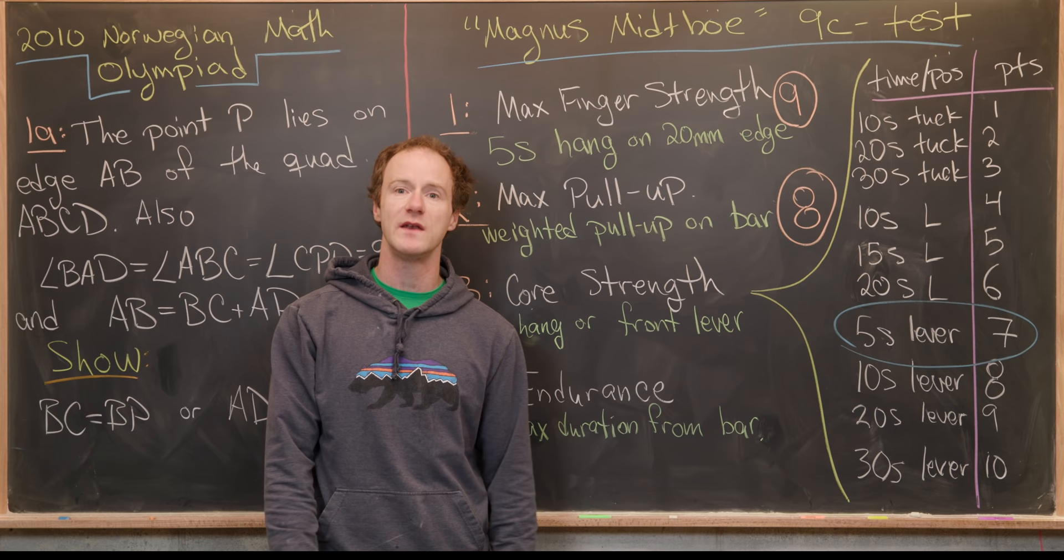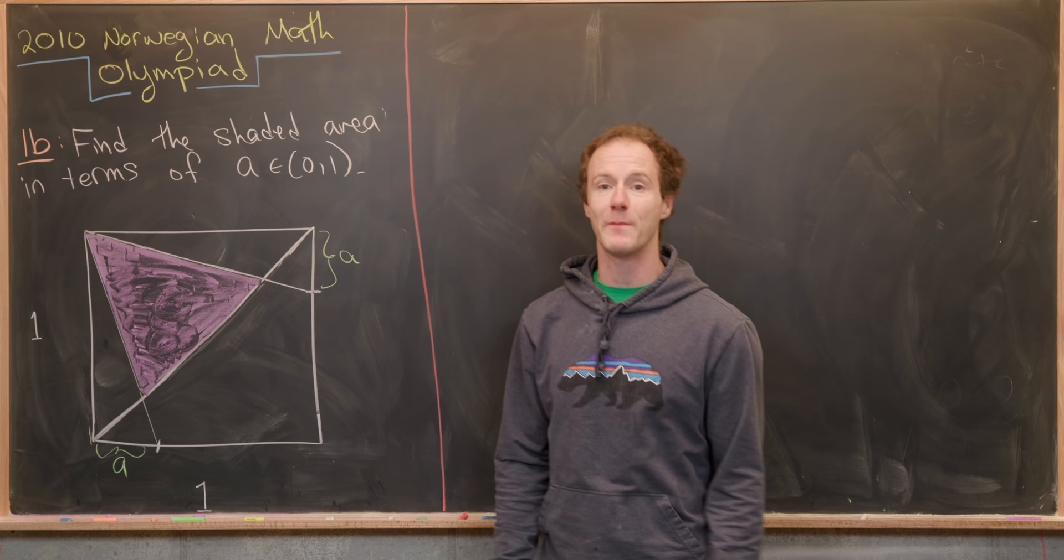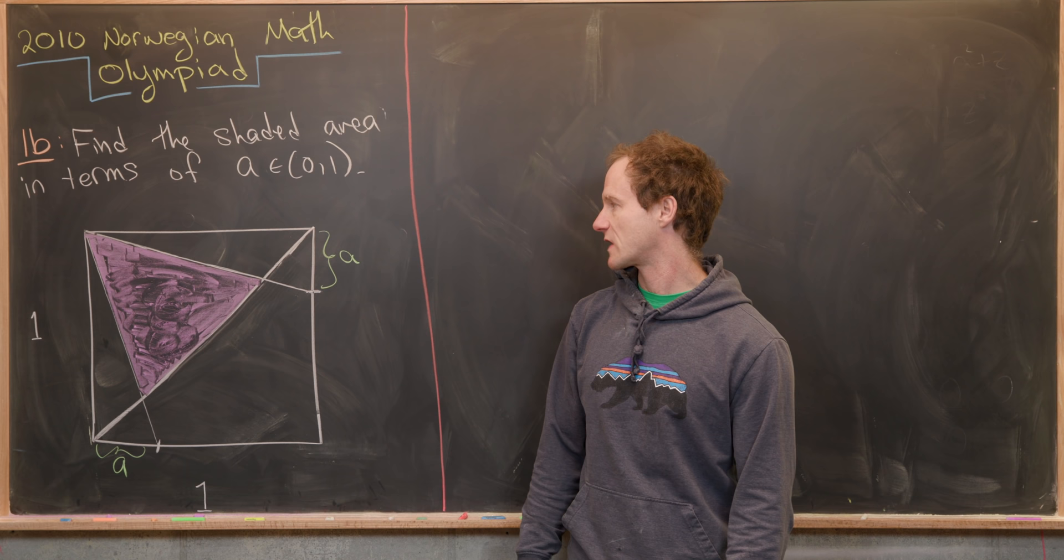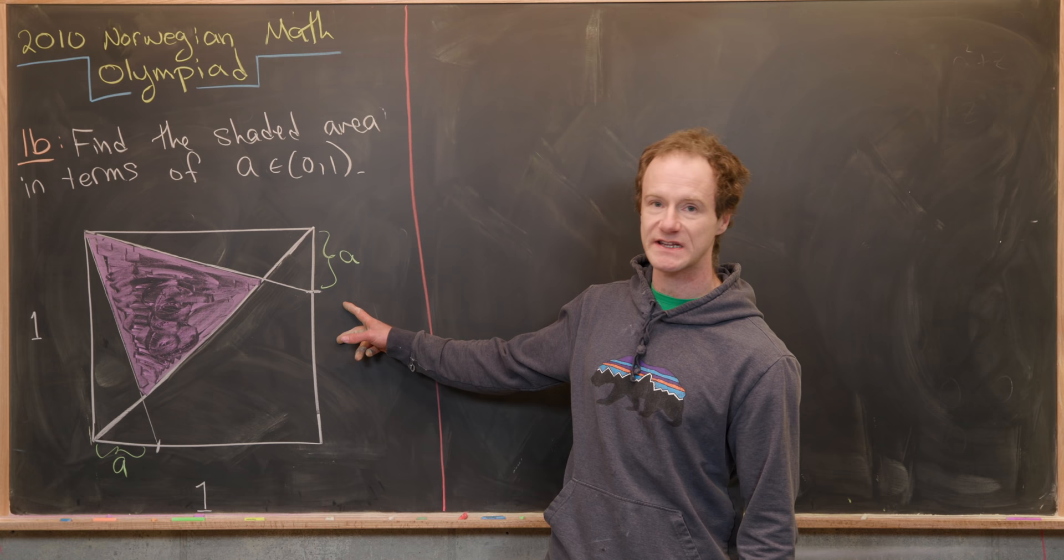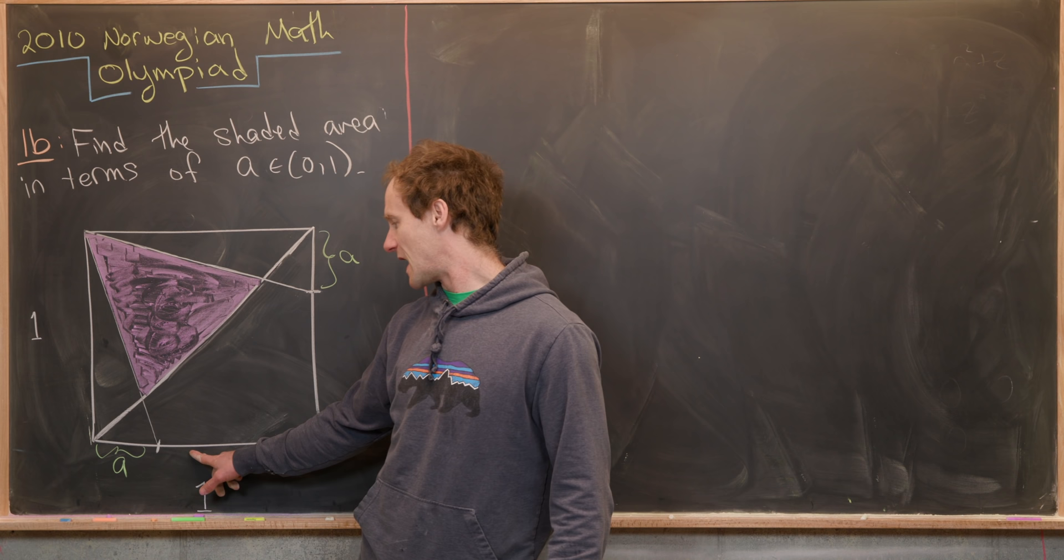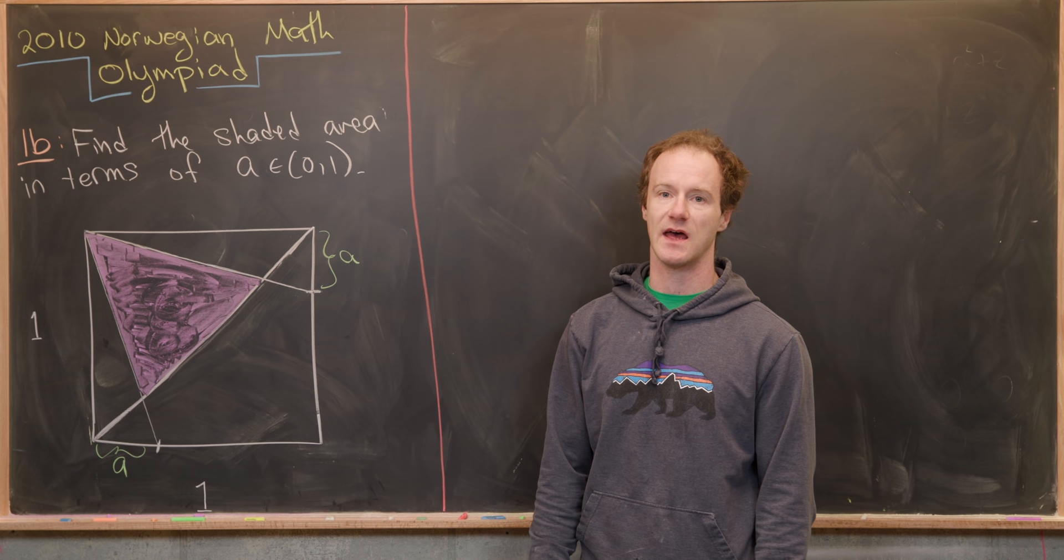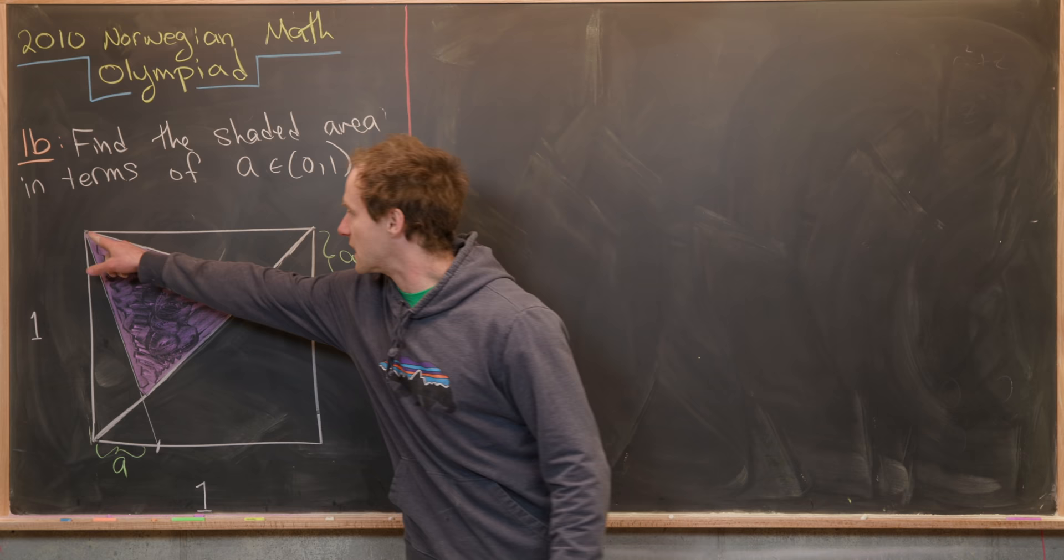So now let's maybe do question 1B from the Norwegian Math Olympiad. Now we're back to part B of this problem from the Norwegian Math Olympiad. So we want to find the shaded area in terms of this number A, which is on the open interval from 0 to 1. That is, it is strictly larger than 0 and strictly less than 1. And it has this following setup. We have this unit square. So that's a square with a side length of 1. Then on this bottom edge, we've ticked off a little bit of it that has length A. And then over here on this right edge, we've also ticked off a bit of it that has length A. Next, we draw a diagonal from here to here. And then line segments from this vertex to this one that we created with this length A. And then likewise over here kind of symmetrically.